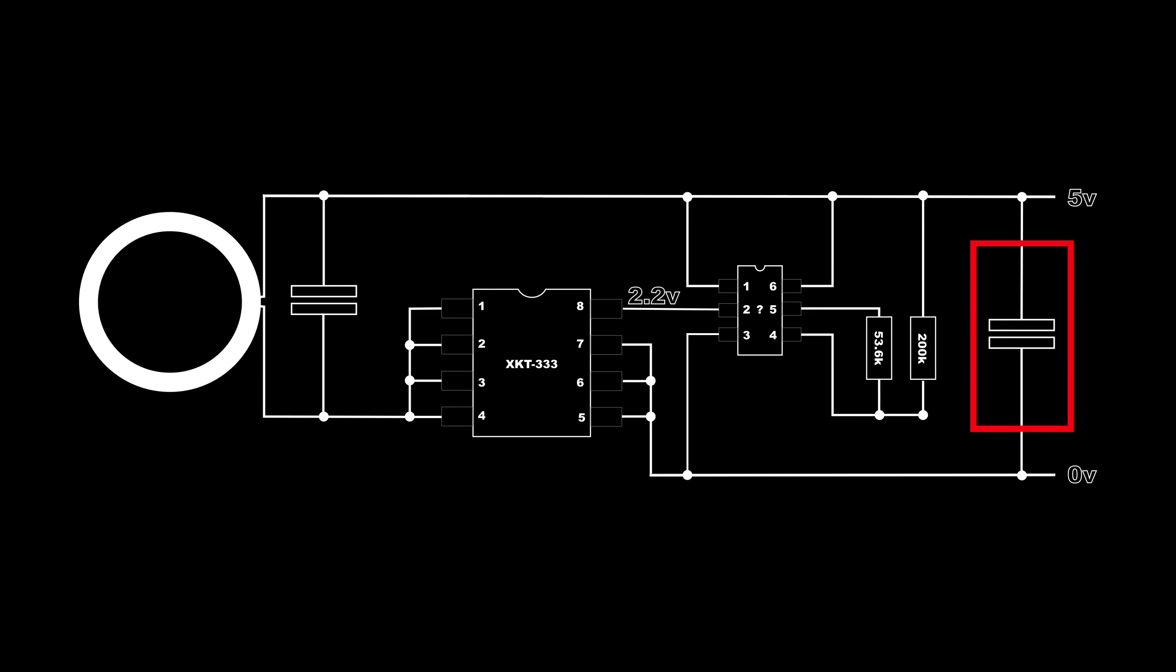We've got an input capacitor followed by the regulator and its resistors. This feeds into the XKT333 which controls one end of the coil and capacitor. The other end of the coil and capacitor is connected to the 5V supply. I believe that all that happens is the XKT333 is periodically connecting the coil to ground, and that's what's creating the signal that is driving the whole thing.